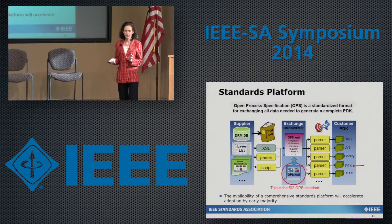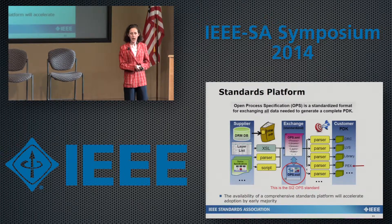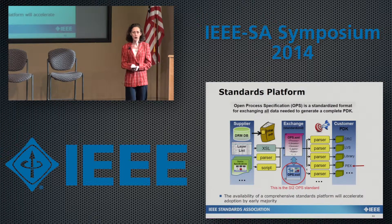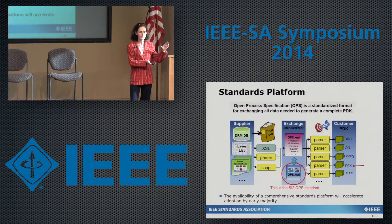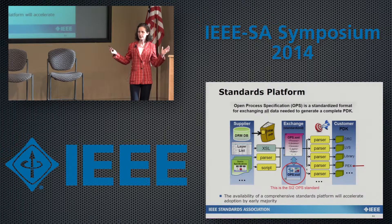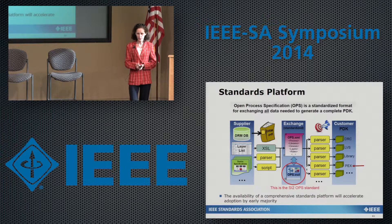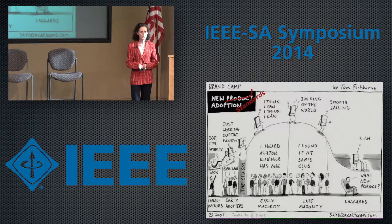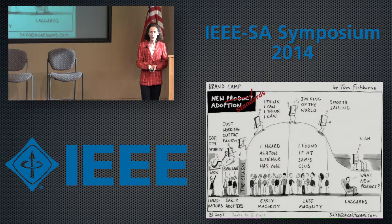With that idea in mind, SI2 came up with the idea of developing a broader database — going back to what we discussed after lunch about the missing database that unifies information needed at all different levels of IC design. We came up with the idea of developing an even bigger database, which is the work of another working group called OPS. OPS is the standardization format for exchanging all data needed to generate a complex PDK. That database will contain everything starting from your design manual, through DRC, LVS, library information, and PEX. Parasitic extraction is just one component, but the idea is to come up with this comprehensive database with all the same information in the same format. We believe that will speed up adoption. Thank you for your attention.